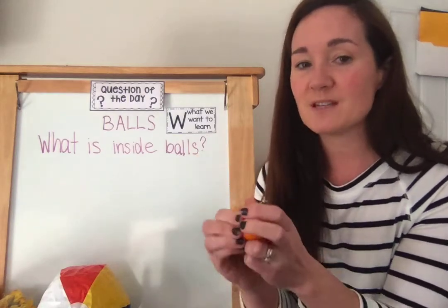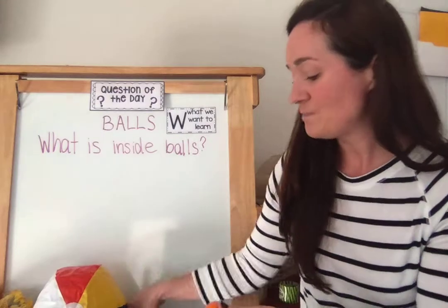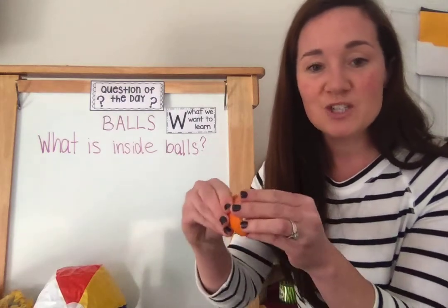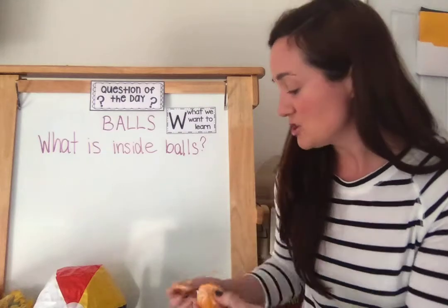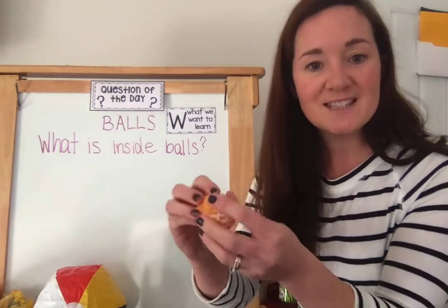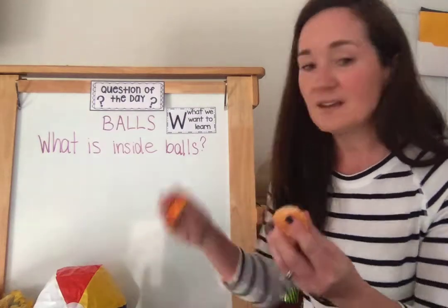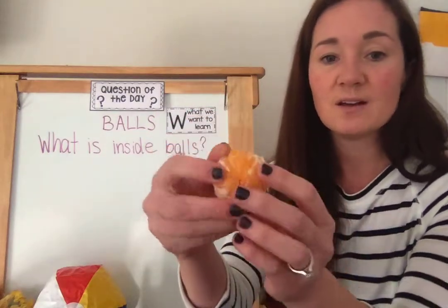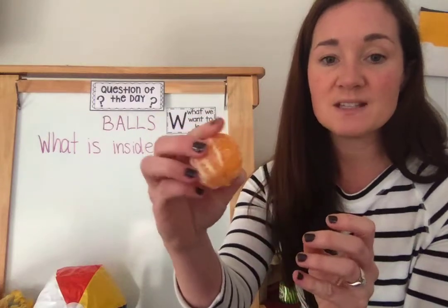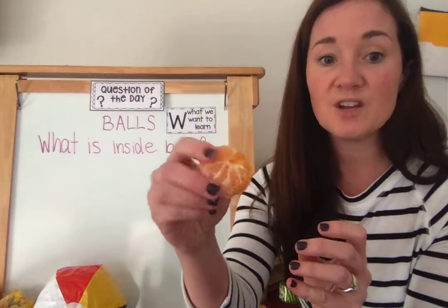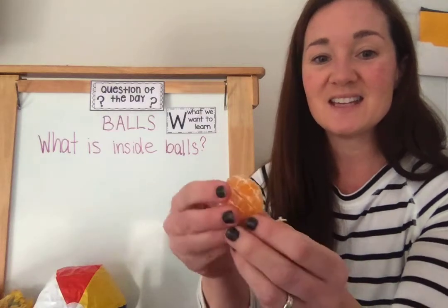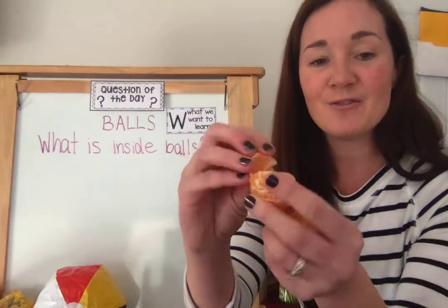Do you think that this orange will bounce if I throw it down on the floor? Let's peel off the orange rind, which is the outside layer of the orange, and let's see what's inside. Now that I have the rind peeled off, let's take a closer look. It's still ball-shaped, still round or spherical. But we can pull it apart into individual pieces of fruit, or orange slices, and we can eat them.